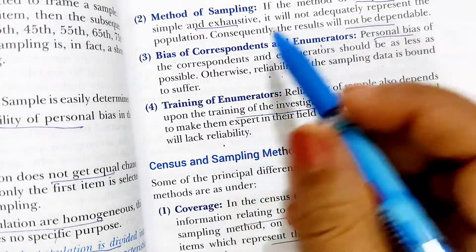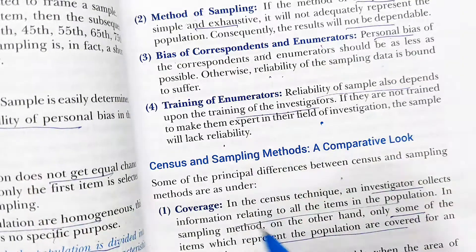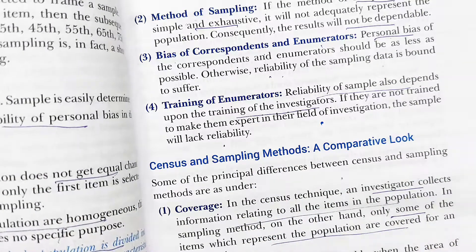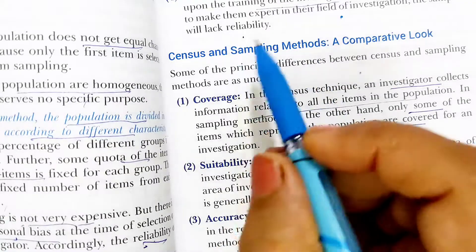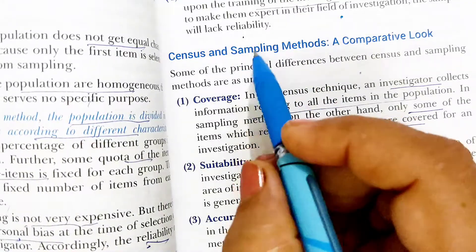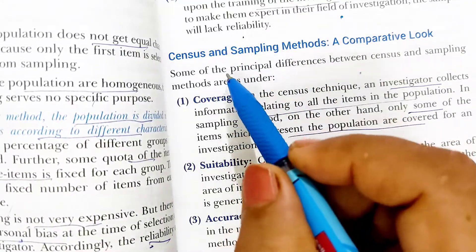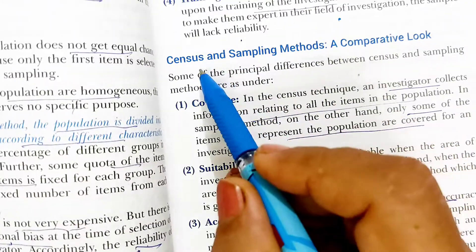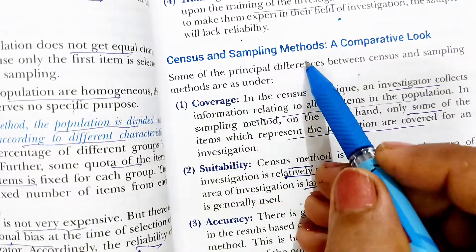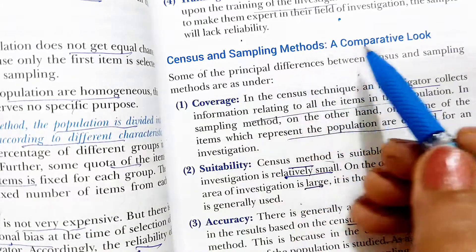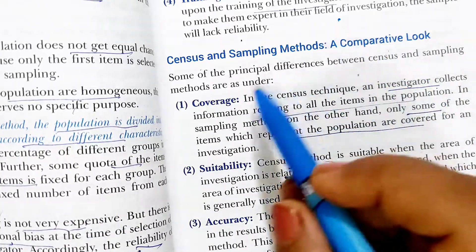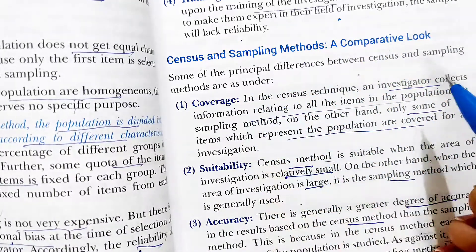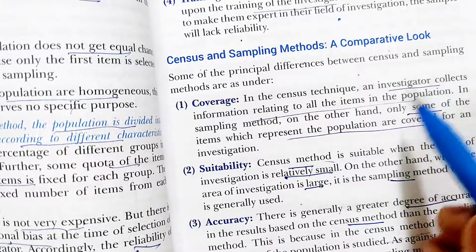So these are the factors on which the reliability of the sampling data depends. Now, the last topic of the chapter is comparing the census method and the sample method — which one is more suitable in which circumstances.